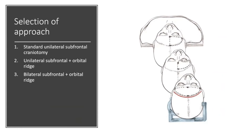The approach can differ according to the extension of the lesion. You can use a simple subfrontal without involving the supraorbital rim, or you can involve the supraorbital rim and even extend to the other side for a bilateral subfrontal. There are three different degrees of bone resection corresponding to tumor extension. For a unilateral tumor not extending much contralaterally, I use the unilateral subfrontal. If I expect to need more brain retraction, I take the orbital rim, which changes the angle of the microscope and minimizes brain retraction — a good way to avoid complications from too much spatula.